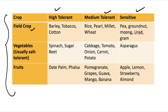When talking about field crops, the high-tolerant crops are barley, tobacco, and cotton. This means that if there is a high amount of salt in the soil, these crops would not be too affected. On the other hand, crops like pea, groundnut, moong, urad, and gram are highly affected by the amount of salt in the soil.